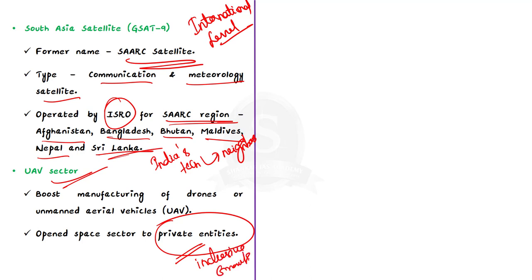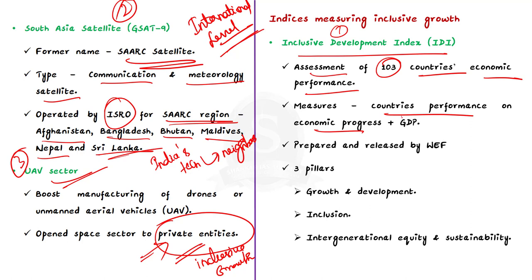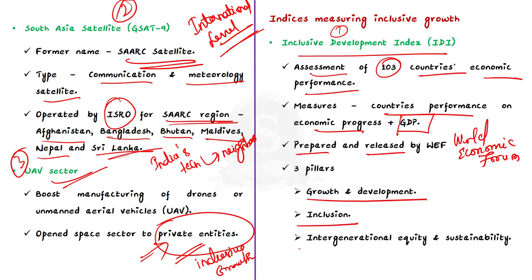So we saw how village inclusiveness is occurring, then how India is promoting inclusive growth at the international level, and also how private sector involvement is creating inclusiveness. Now let's see about the indices used in measuring inclusive growth. First is the Inclusive Development Index. It is an assessment of countries' economic performance that measures how countries perform on economic progress in addition to GDP, and this index is prepared and released by the World Economic Forum. The index has three pillars: growth and development, inclusion, and intergenerational equity and sustainability.